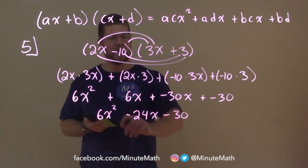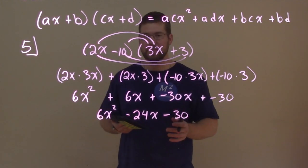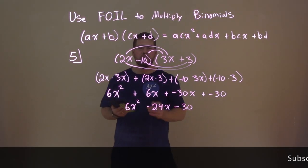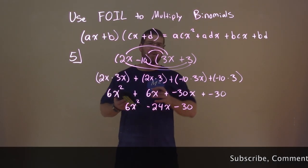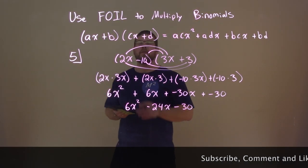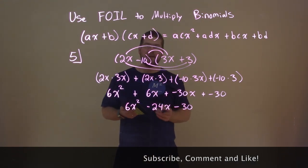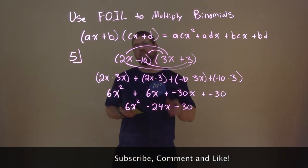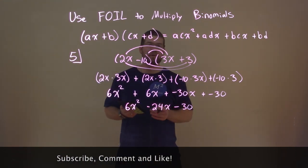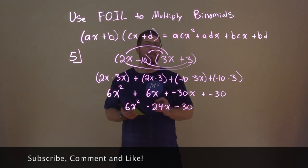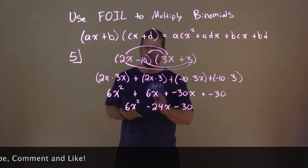6X squared minus 24X minus 30. So hopefully now you understand FOIL a little better — First, Outer, Inner, Last — to multiply binomials. If so, please hit the like button down below and subscribe to our channel. This helps us make more videos for viewers like you.